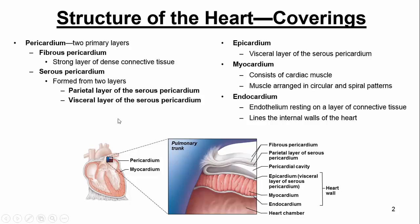Take a look at the picture on the bottom here. The first primary layer is the fibrous pericardium, and this is composed of dense connective tissue — a very, very strong layer. The next layer is the serous pericardium, and this is formed from two particular layers: the parietal layer of the serous pericardium and then the visceral layer of the serous pericardium.